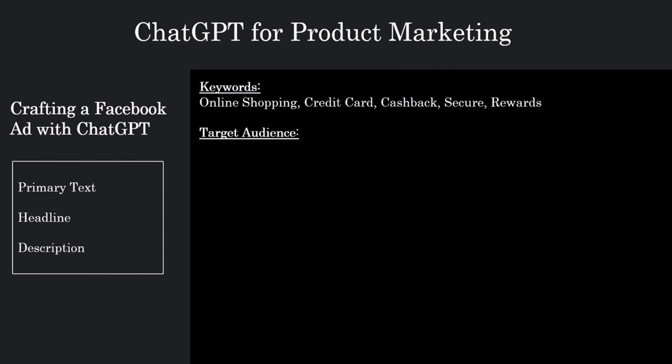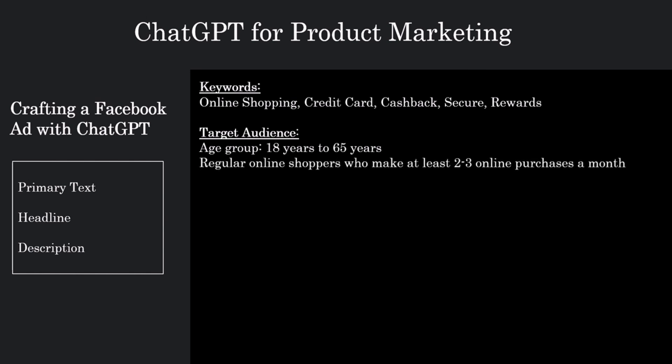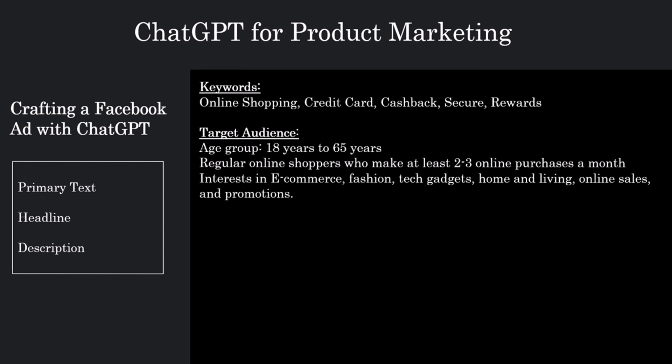Next is target audience. Be detailed about demographics, psychographics, and any other relevant characteristics of the target audience. The more specific you are, the more tailored the ad copy will be. In our example, let's provide details like age group — 18 to 65 years — and the target audience is regular online shoppers who make at least 2 to 3 online purchases a month, with interests in e-commerce, fashion, tech gadgets, home and living, and online sales and promotions.